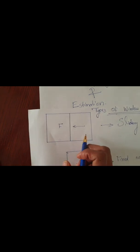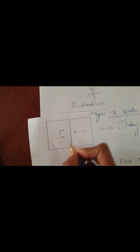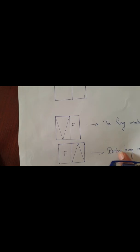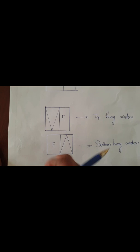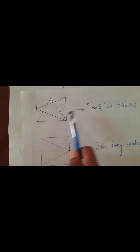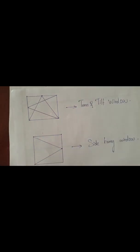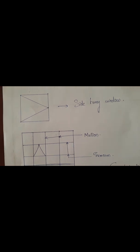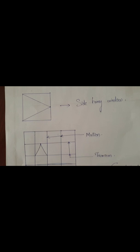Next I will show you some types of window openings. This is a sliding window — same as a sliding door but the height will be less. One portion is sliding, one is fixed, or both shutters can slide. Then fixed windows — also seen in flat centers. Next is top hung window and bottom hung window. Top hung means we can open it outward at the top; normally provided in curtain walls. Turn and tilt windows — we can open this window as top hung and as side hung. Next one is side hung windows — in one side we can open.